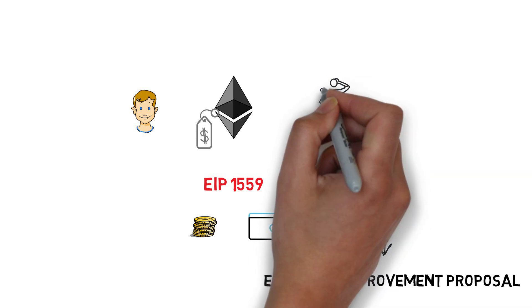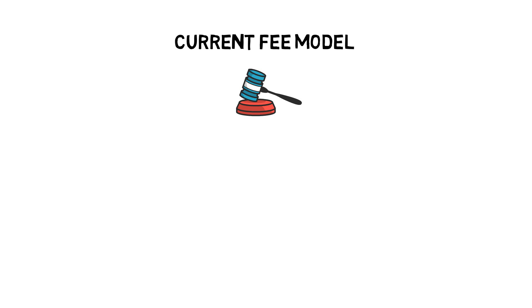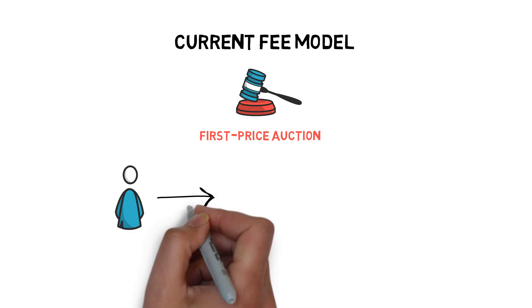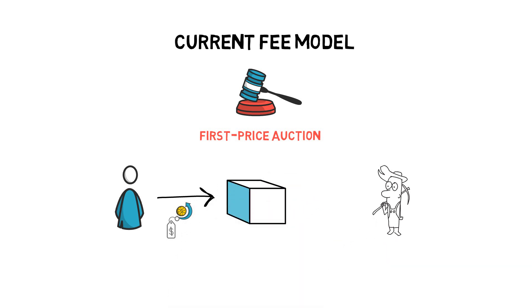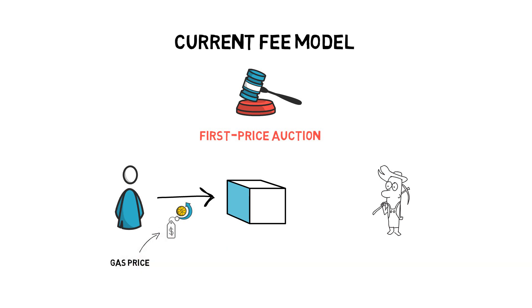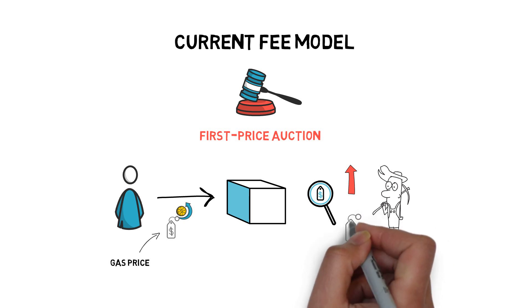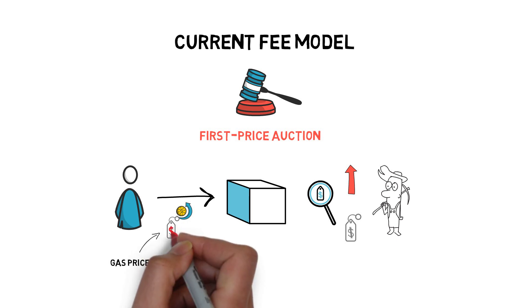To understand why we need this proposal, let's quickly review how the current Ethereum fee model works. The current fee model is based on a simple auction mechanism, also known as a first price auction. Users who want to have their transaction picked up by a miner have to essentially bid for their space in a block by submitting a gas price they are willing to pay. Miners are incentivized to pick up transactions by sorting them by the highest gas price and including the most profitable ones first. This can be quite inefficient and usually results in users overpaying for their transactions.